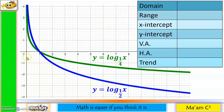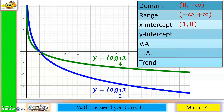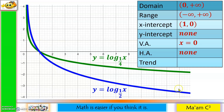For another example: domain is (0, +∞), 0 not included; range is (−∞, +∞); x-intercept is (1, 0); no y-intercept since the y-axis is the vertical asymptote, x = 0; no horizontal asymptote; and since both bases are less than 1 but greater than 0, the trend is decreasing.